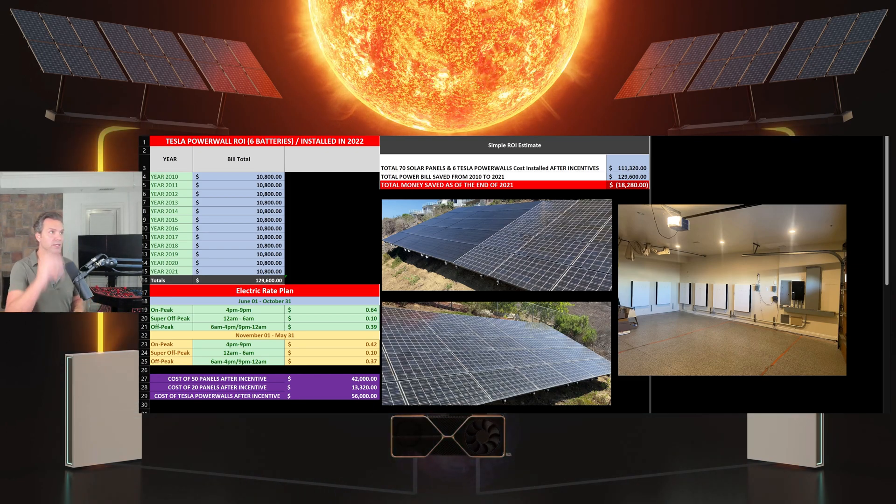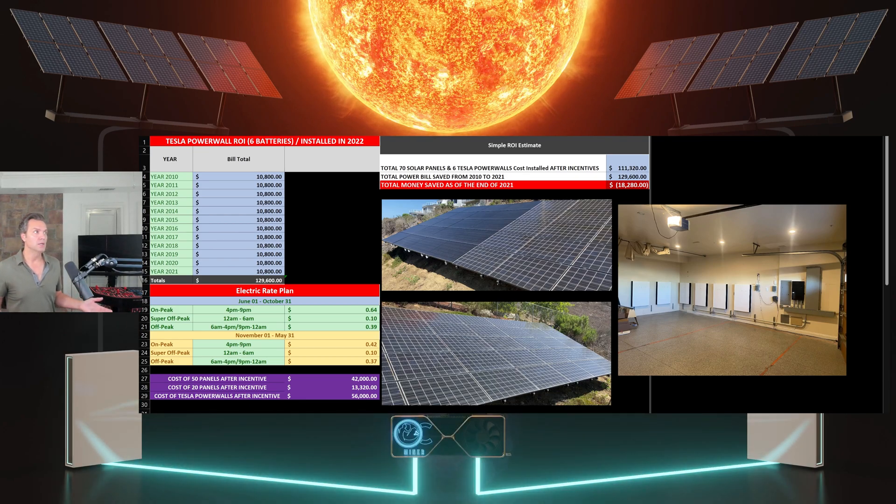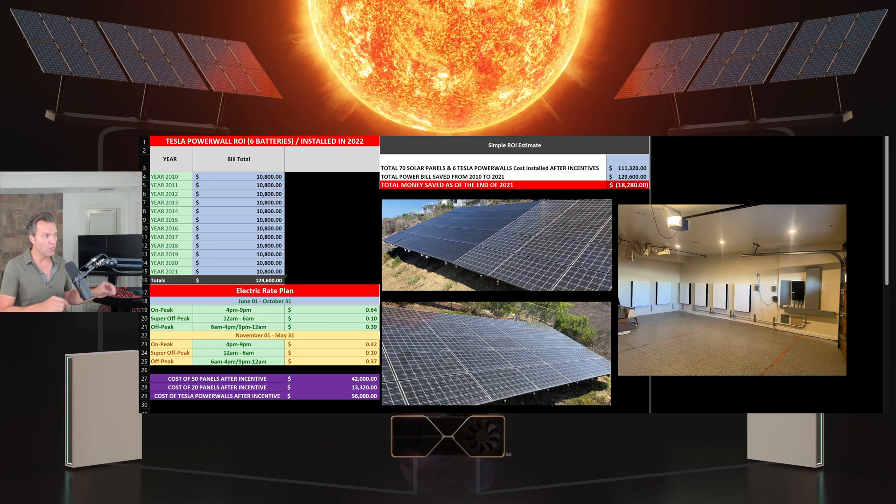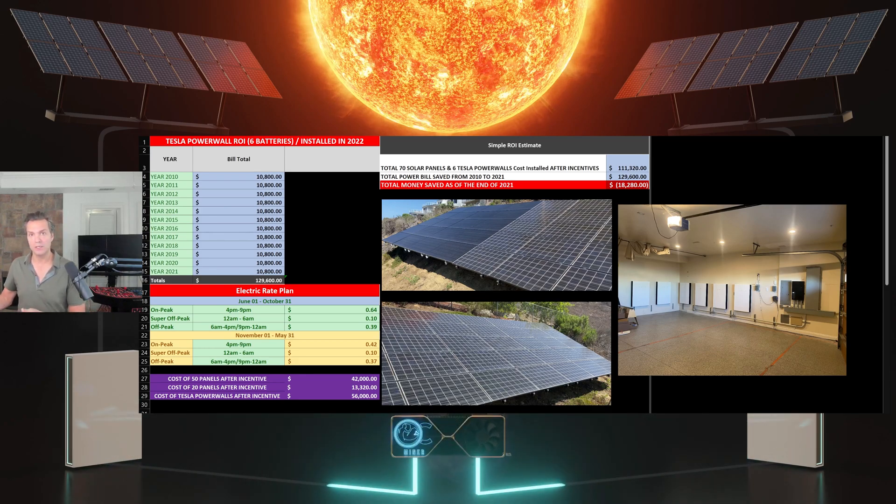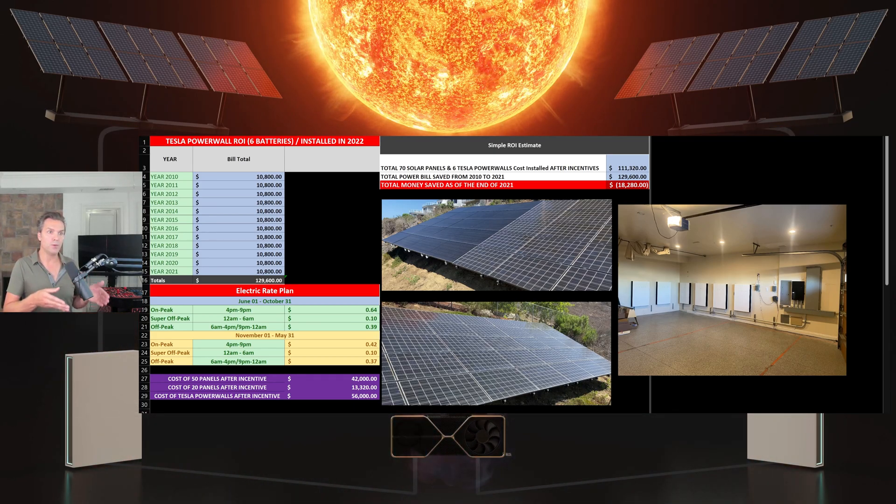So if I come down below, I've got the electric rate plan, this is my current rate plan just so you can see what power costs here in California right now. But if I come under that in the purple, you can see where I've laid out each of the three solar and Powerwall prices that I've paid. And this is again after the incentive. And once I add up all three of those we come up to the simple ROI estimate in the top right and you can see my total 70 solar panels and six Tesla Powerwalls cost after incentives was $111,320. Had I paid a power bill for those years instead of having solar and the Tesla Powerwalls I would have spent $129,600, around $130,000. So if I subtract the amount of money I've paid after incentives for my solar and Powerwalls from the amount I would have pretty much thrown away in power, currently at this moment I am at least $18,280 to the good and that's going to continue to save me money.